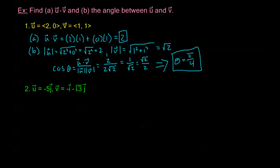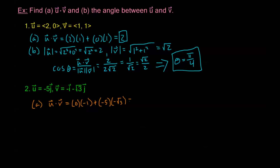Now let's try the second example where the vectors are given in i and j form. For part a, the dot product: my horizontal component for u is 0 (no i term), so I have 0 times negative 1, plus the product of the vertical components: negative 5 times negative square root of 3. So u dot v equals 5 square root of 3.